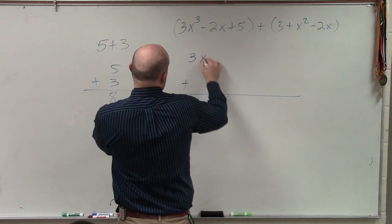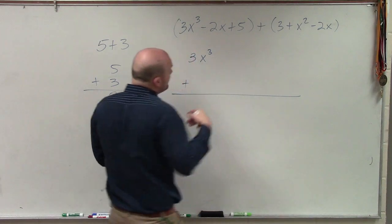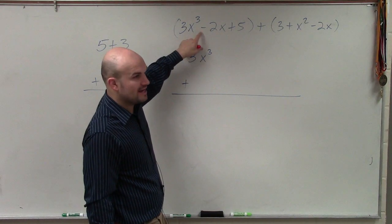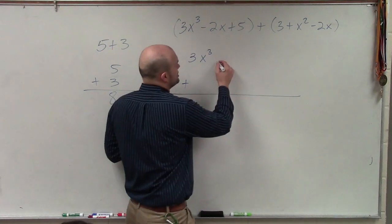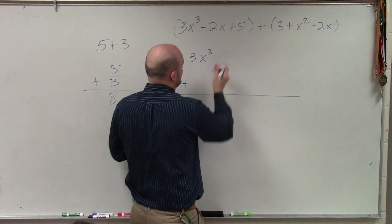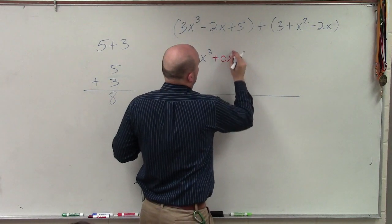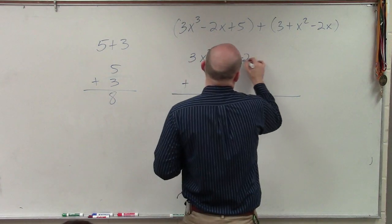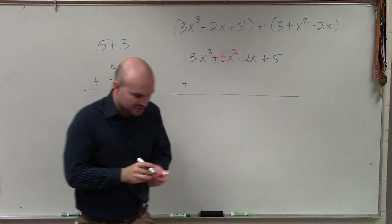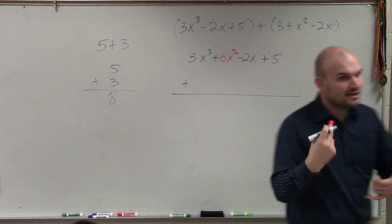So this one, I have 3x cubed. Now, also notice that there is no x squared, right? So I can give that a place value. I'll use a red. Minus 2x plus 5. You don't have to do the place value, but I'm going to show you why it's at least helpful to see what that would be.